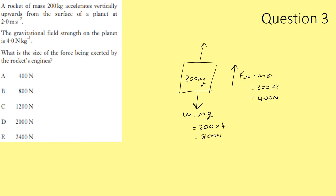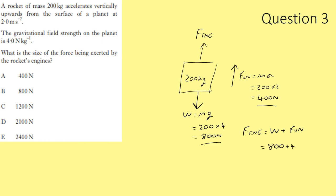The engine force must first overcome the weight and then provide additional unbalanced force to cause acceleration. So engine force = weight + unbalanced force = 800 + 400 = 1200 newtons.